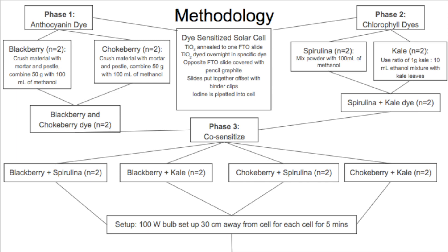Phase 2 uses chlorophyll dyes extracted from both spirulina and kale, which are also combined to create an additional dye. Spirulina dye is extracted by mixing its powder with 100 milliliters of methanol. Kale dye is extracted by grinding it with a mortar and pestle, then combining it at a ratio of 1 gram of kale per 10 milliliters of ethanol. Phase 3 combines dyes across groups, with each anthocyanin dye combined with a different chlorophyll dye in a 1-to-1 ratio.